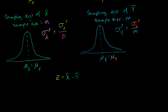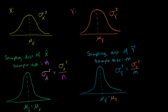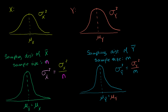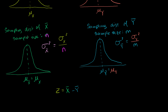To get a sample mean of x, you take n samples from the population and find their mean — that result can be viewed as a sample from the sampling distribution of x. Similarly, taking m samples from y's population and finding the mean gives a sample from y's sampling distribution. So z is a random variable where you take n samples from x's population, get their mean, take m samples from y's population, get their mean, and find the difference.